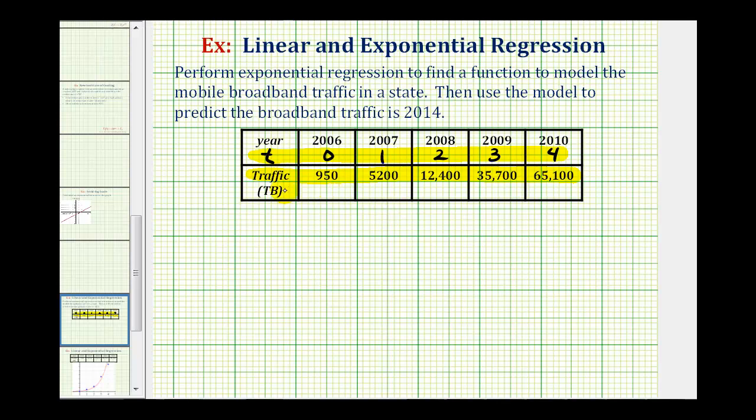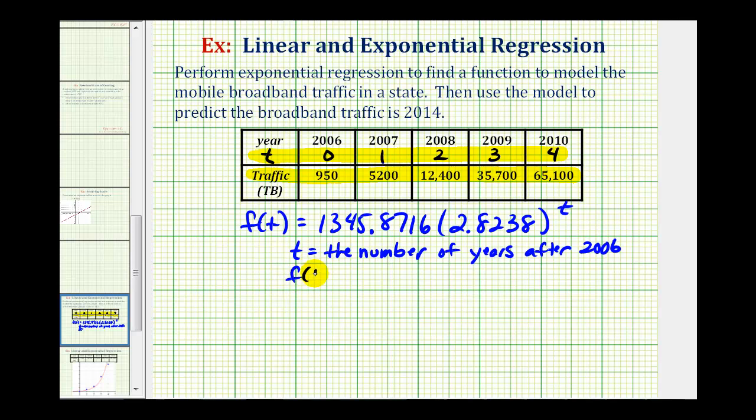This would give us the exponential function f(t) = 1345.8716 times 2.8238 raised to the power of t, where t equals the number of years after 2006 and f(t) equals the traffic in terabytes.